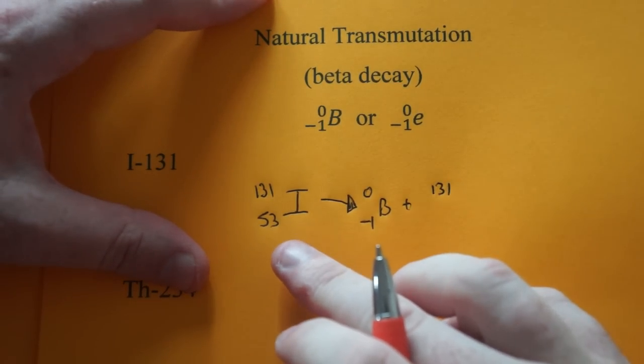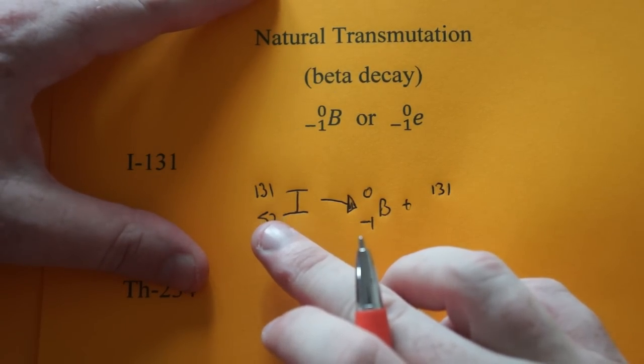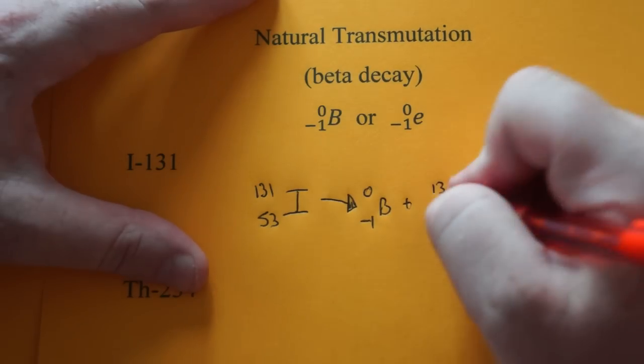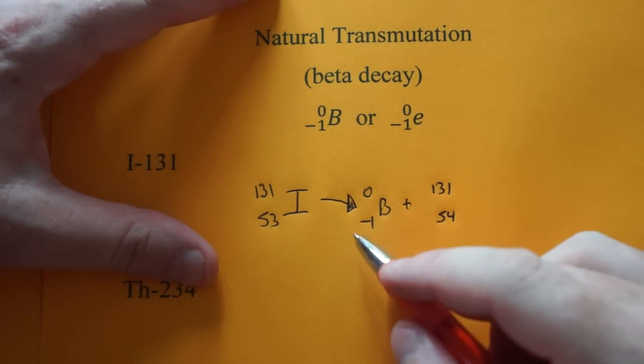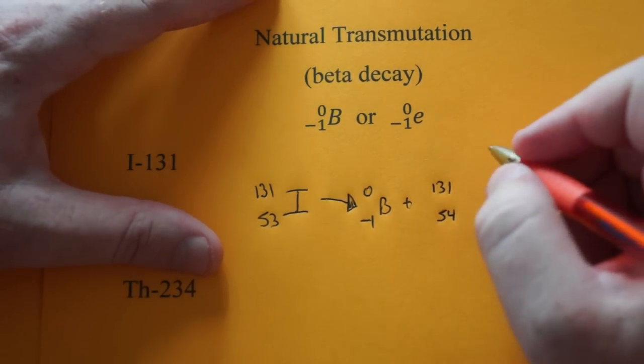Now, this one's interesting. Remember, a neutron turned into a proton. So 53 is equal to minus one plus 54. The atomic number goes up because a neutron turns into a proton when it kicks off a beta minus particle.